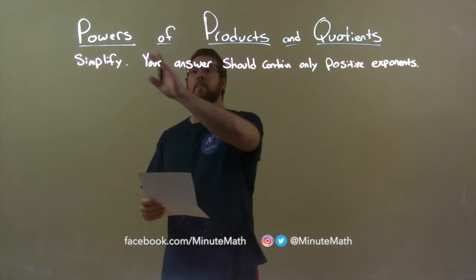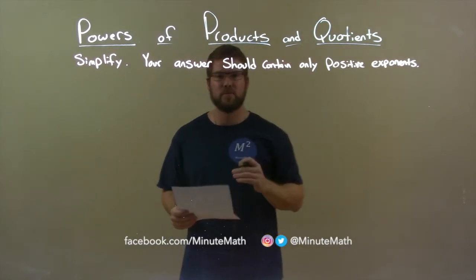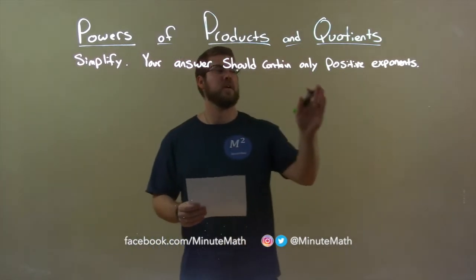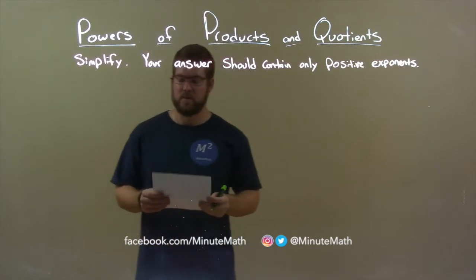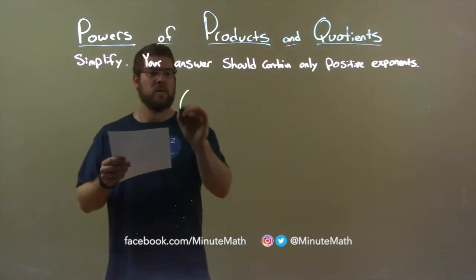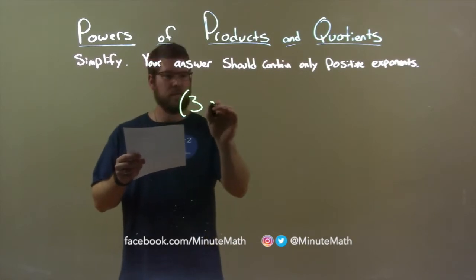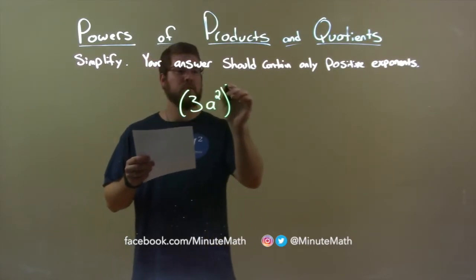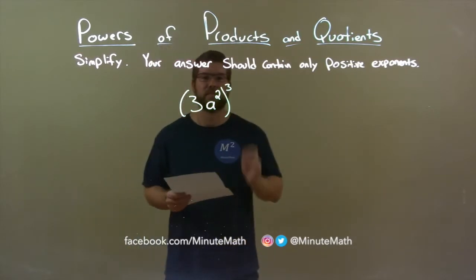Today we're learning about powers of products and quotients. We're simplifying, and your answer should contain only positive exponents. So, if I was given this problem, 3a squared all to the third power.